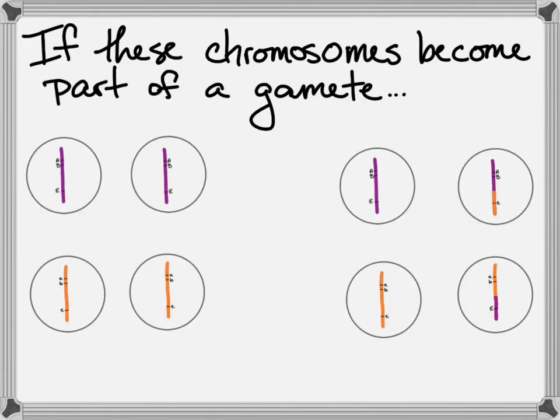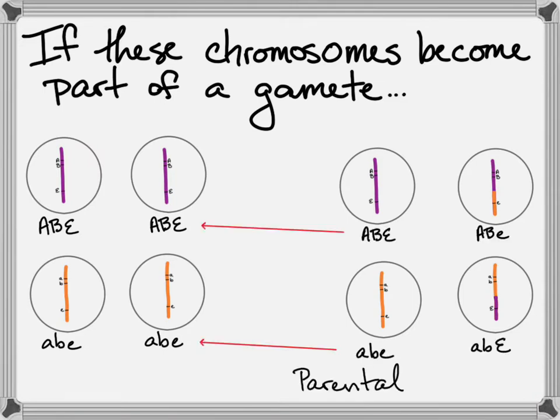Let's look at these chromosomes as gametes, as haploid gametes. If there's no recombination, these are the only combinations of A, B, and E you would get - all dominant or all recessive. But if recombination has happened, you'll see that there are some parental gametes, but there are also some gametes with new combinations, introducing variation into potential future offspring.